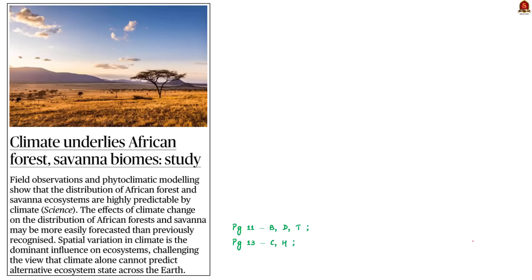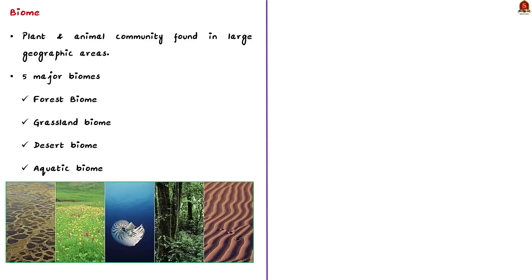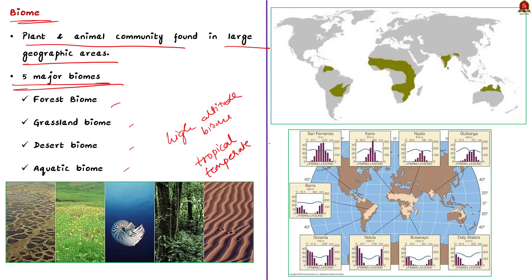Now, we will move on to the next article discussion. Take a look at this news article. This news article talks about the savannah biome. According to the article, a study revealed that climate plays a significant role in predicting the distribution of African forests and savannah ecosystems. So, in this context, let us quickly go through the savannah biome. Firstly, know that a biome is a plant and animal community found in large geographical areas. The geographical extent of a biome is often determined by the climate. There are five major biomes on earth which includes forest biome, grassland biome, desert biome, aquatic biome and high altitude biomes. There are two types of grassland biomes. One is a tropical grassland and the other is a temperate grassland. Know that the savannah is a type of tropical grassland that can be found in different parts of the world such as Africa, Australia, South America and even India. You can see the distribution of savannah in the image given here.